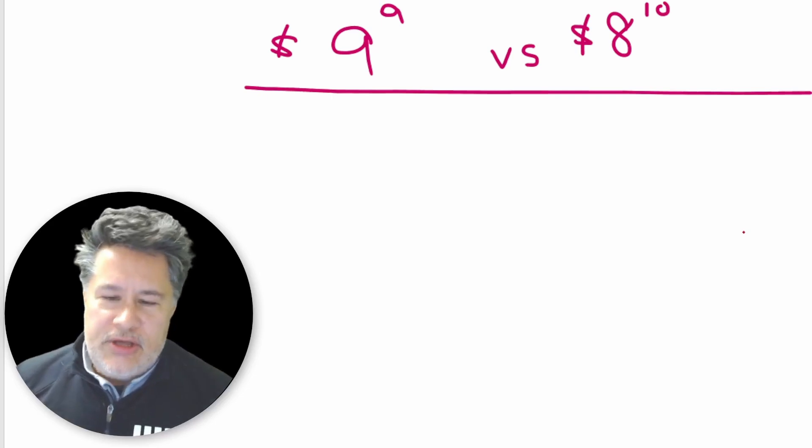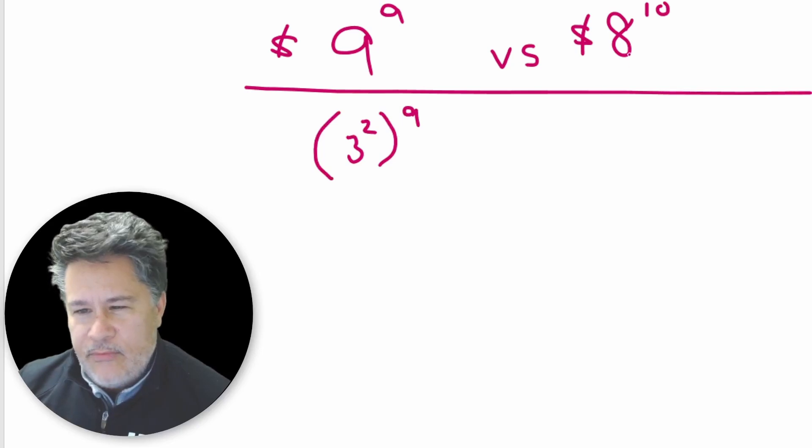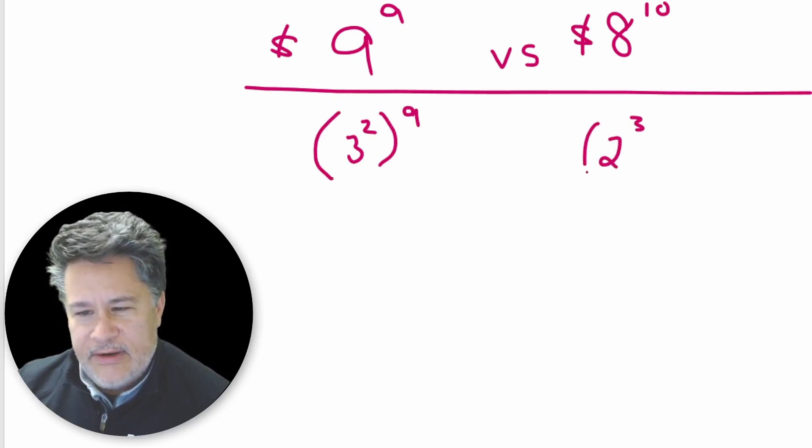All right, guys. So first thing that you would want to do is use some rules of exponents. You want to first get that nine written as three squared. And then that, of course, is still to the ninth power. And then we want to take the eight and write it as two cubed and raise that to the tenth power.